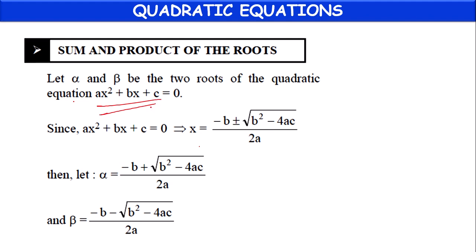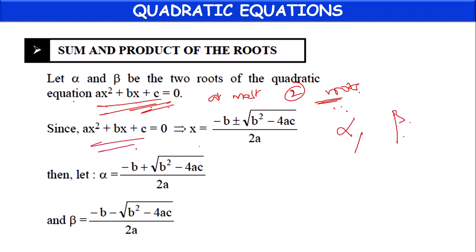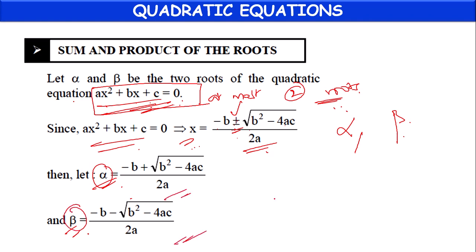We know that the general form of quadratic equation is ax² + bx + c = 0, which will be having at most two roots. Suppose one root is considered as alpha and another one as beta. The quadratic equation will be having roots in the form of (-b ± √(b²-4ac)) / 2a. If you consider the positive value then we can take it as alpha, if you consider the negative symbol then we can take it as beta. So the quadratic equation in the form of ax² + bx + c = 0 will be having two roots alpha and beta in this form.